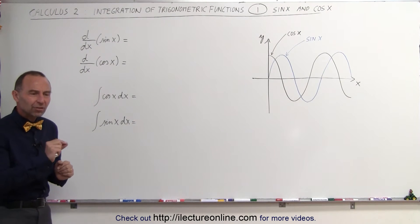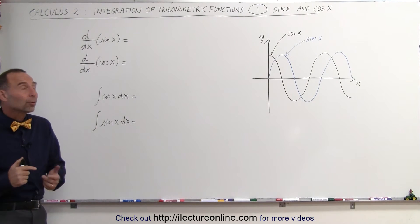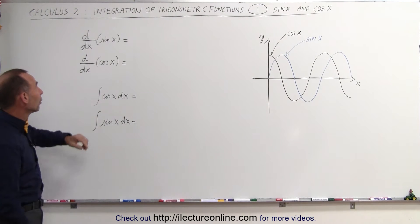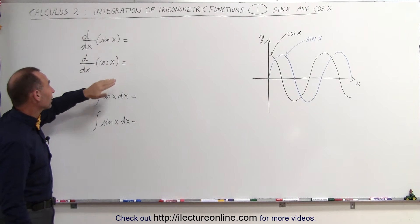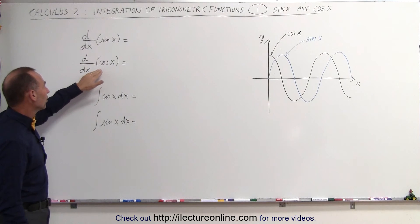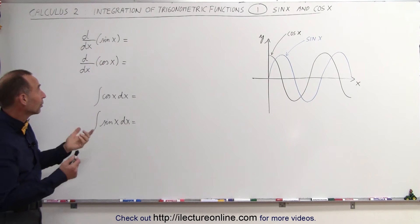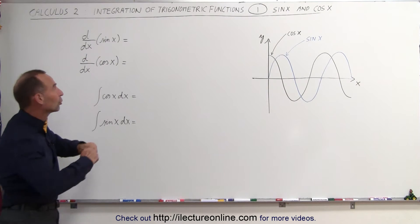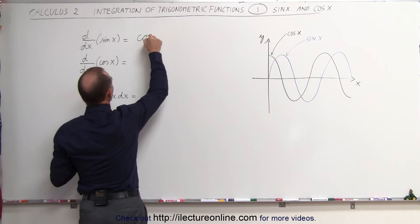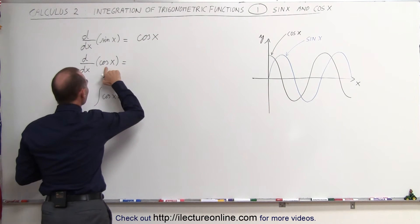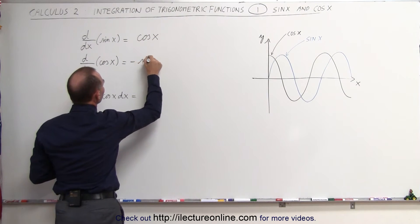Since integration is the reverse of differentiation, let's first go back to something we're familiar with. What is the derivative with respect to x of the sine of x, and what is the derivative of the cosine of x with respect to x? Well, the derivative of the sine of x is equal to the cosine of x, and the derivative of the cosine of x is equal to the negative sine of x.